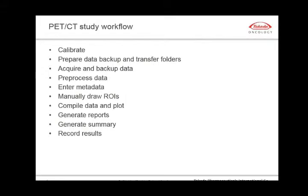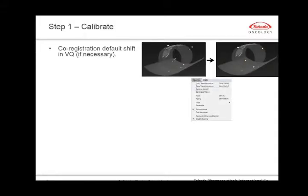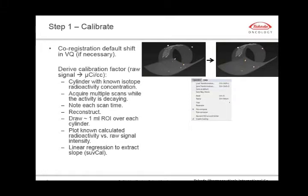That's where VivoQuant and IPACS come into play. I'll now run through our typical standard PET-CT study workflow, which consists of approximately ten steps. The first step, which takes place even before we plan a study, is that we calibrate our scanner. We do two types of calibration, the first being a co-registration. For that, we take a short PET-CT acquisition of a cylinder containing four radioactive point sources, load the reconstructed data in VivoQuant, co-register both images manually, and save this transformation as a default chip.